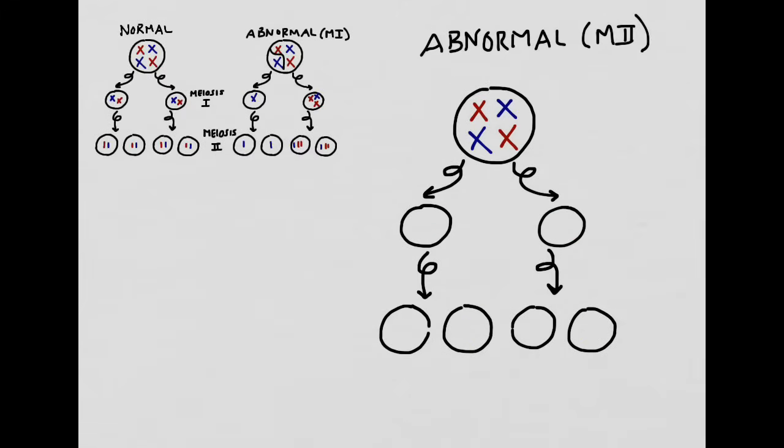Now let's see what would happen if the problem occurred during meiosis 2 rather than meiosis 1. We're going to assume that the first round of division, meiosis 1, prophase, metaphase, anaphase, and telophase 1, went perfectly, and we wound up with exactly the right number of chromosomes in the first round of cells.